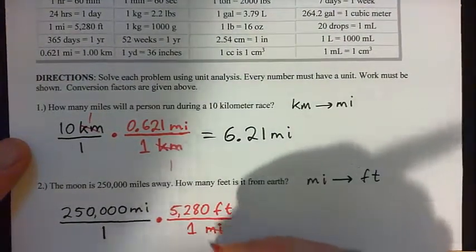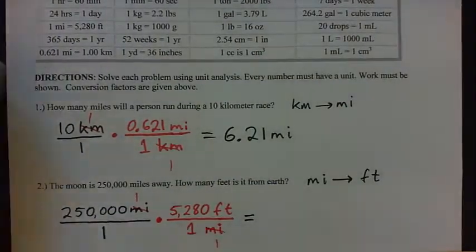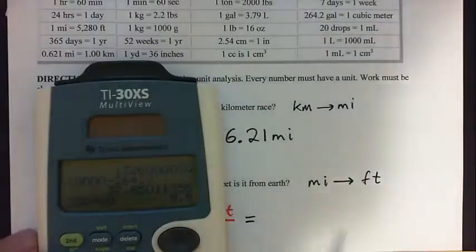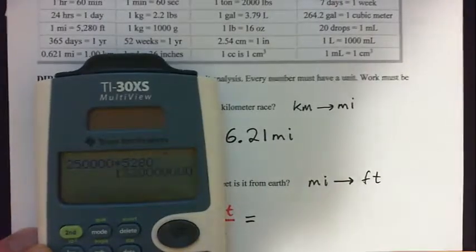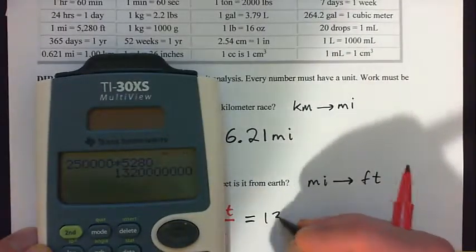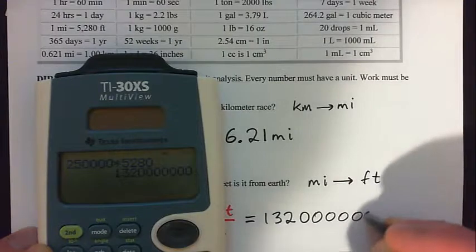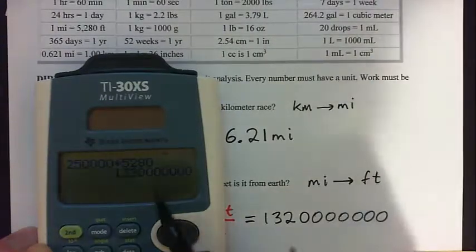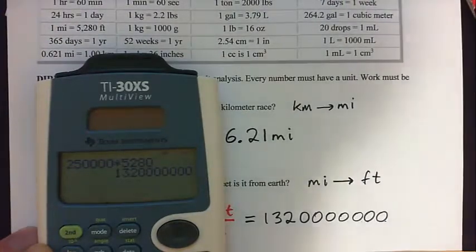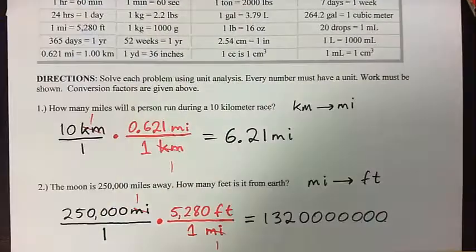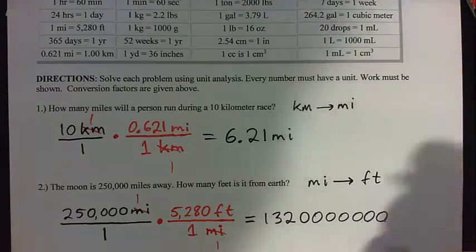We cross-cancel the miles, and we get 250,000 times 5,280. I'll plug that in the calculator. The result is 1,320,000,000 — with seven zeros. For every three digits, put a comma to help read the number. Starting from the right: thousands, millions, billions. So the leading digit is in the billions place.